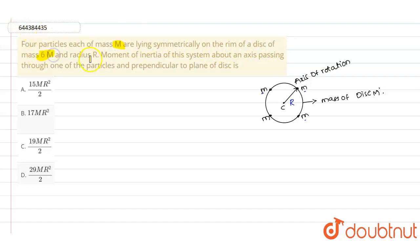The disc has mass 6M and radius R. The moment of inertia of this system about an axis passing through one of the particles and perpendicular to the plane of disc is...